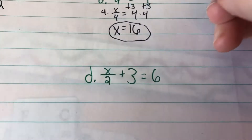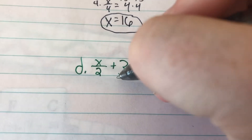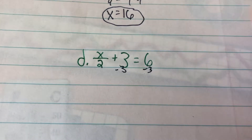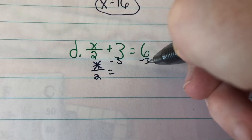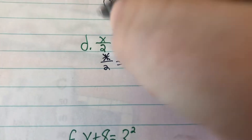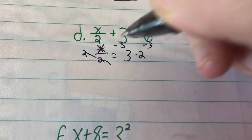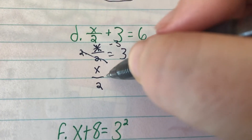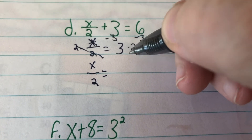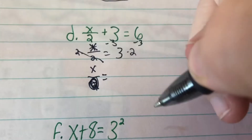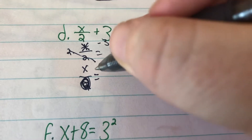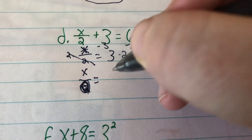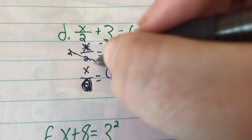On D, we have x over 2 plus 3 equals 6. So we need to subtract 3 from both sides — minus 3, minus 3. x over 2 equals 6 minus 3, which is 3. To get rid of the 2 in the denominator, we multiply both sides by 2, so that 2 is gone. Now we have x equals 3 times 2. 3 times 2 is 6, so x equals 6.